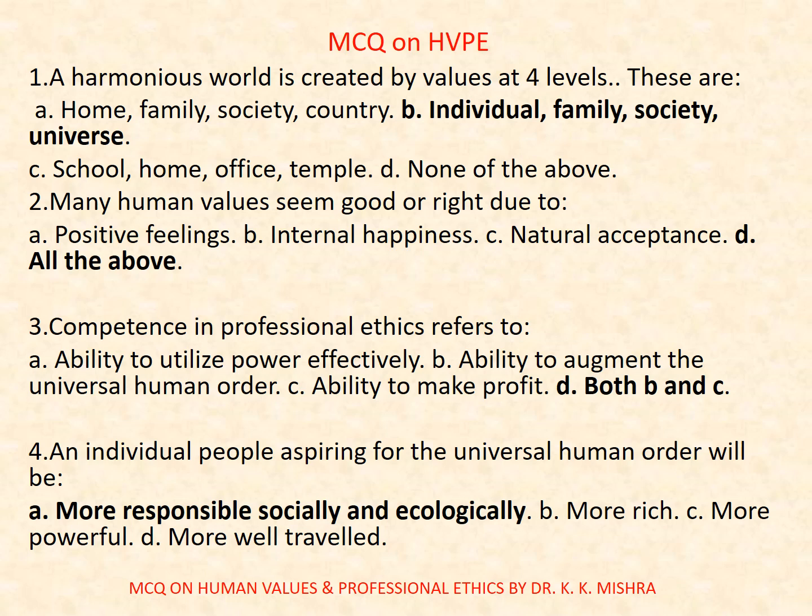Question number four: An individual aspiring for the universal human order will be. Options are: A. More responsible, socially and ecologically. B. More rich. C. More powerful. D. More well-traveled. Correct option is A: More responsible, socially and ecologically.